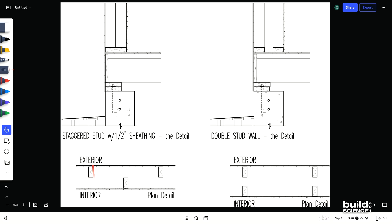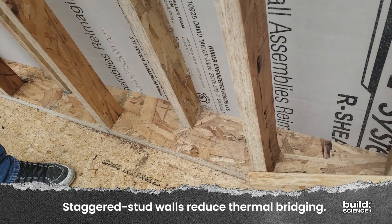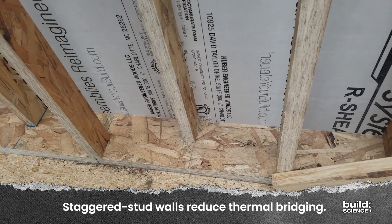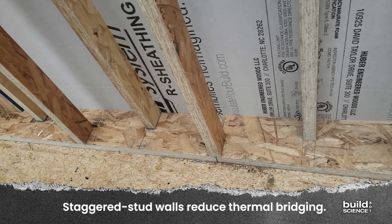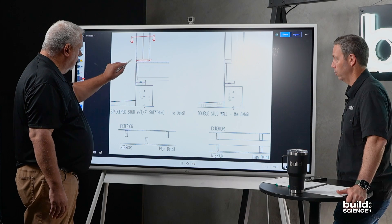We basically do 2x4s, 24 inches on center, and interior 2x4s, 24 inches on center. And you can see we have continuity of insulation through here, so we don't have any thermal bridging. We have a continuous top and bottom plate, but the studs are not.